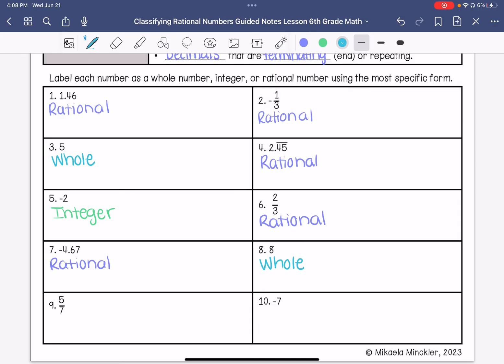Number 9, 5/7, that is rational. And negative 7 is an integer.